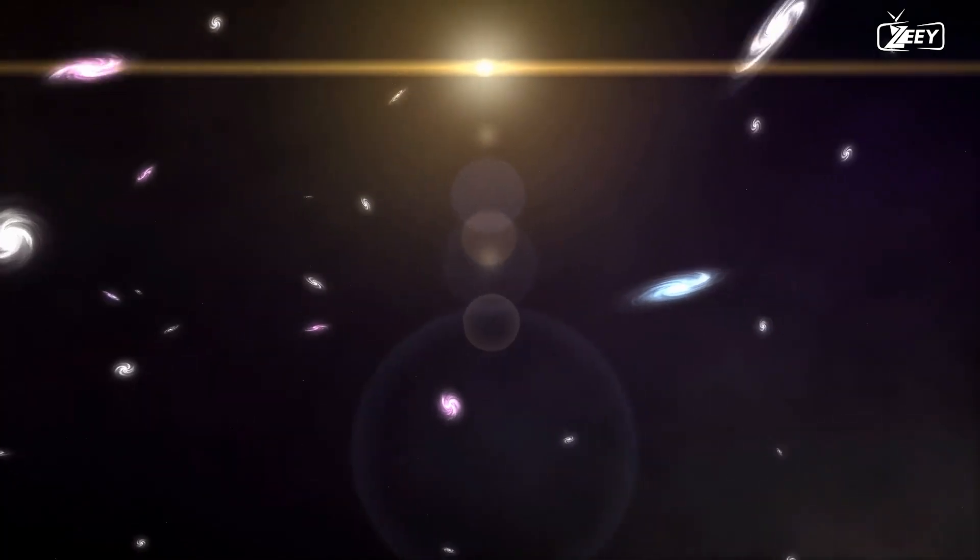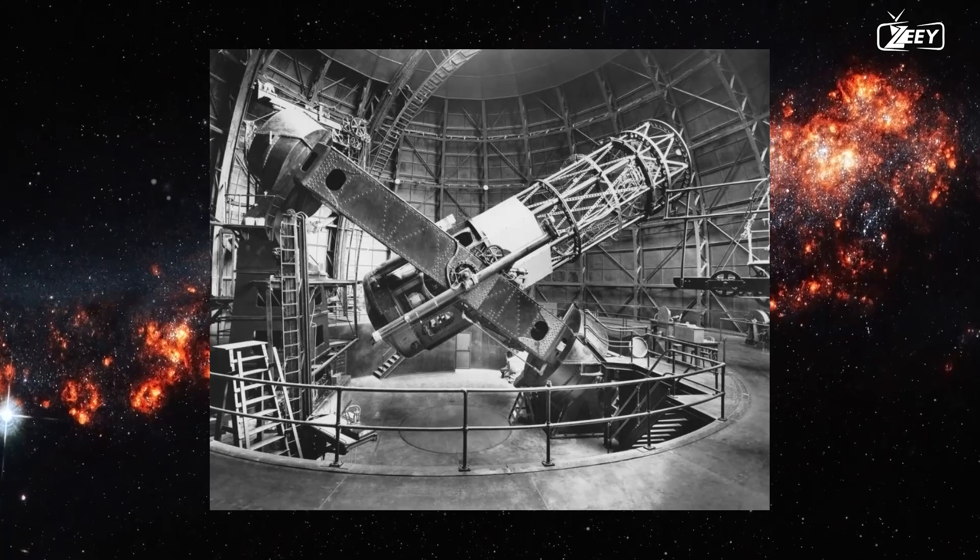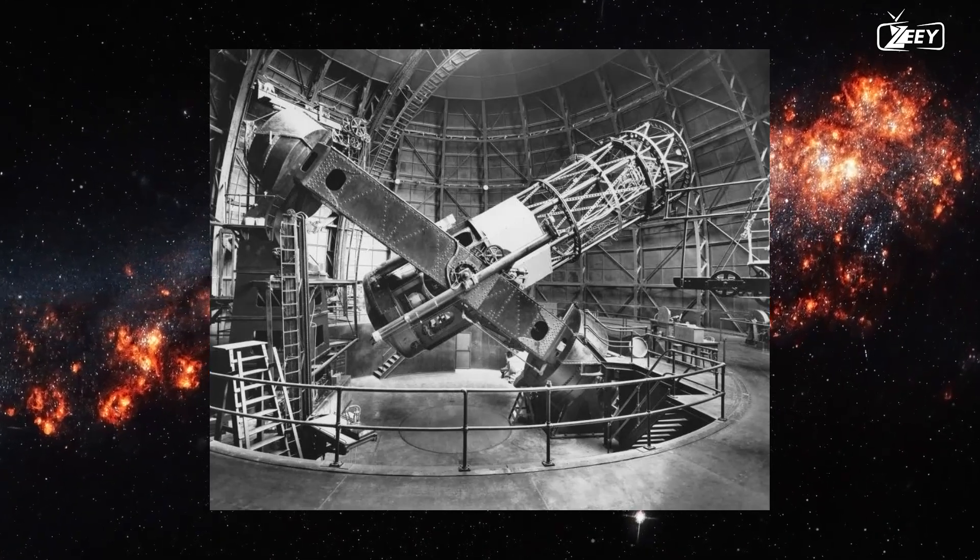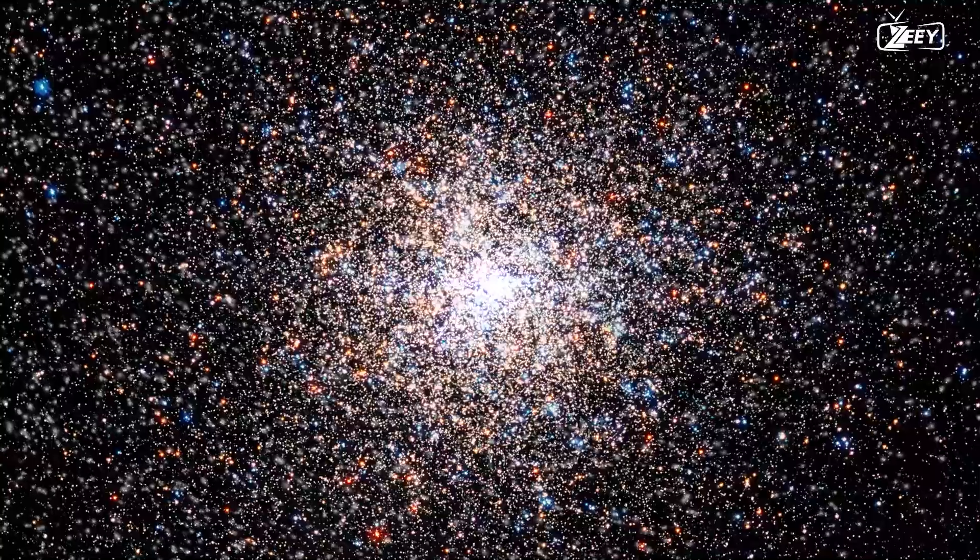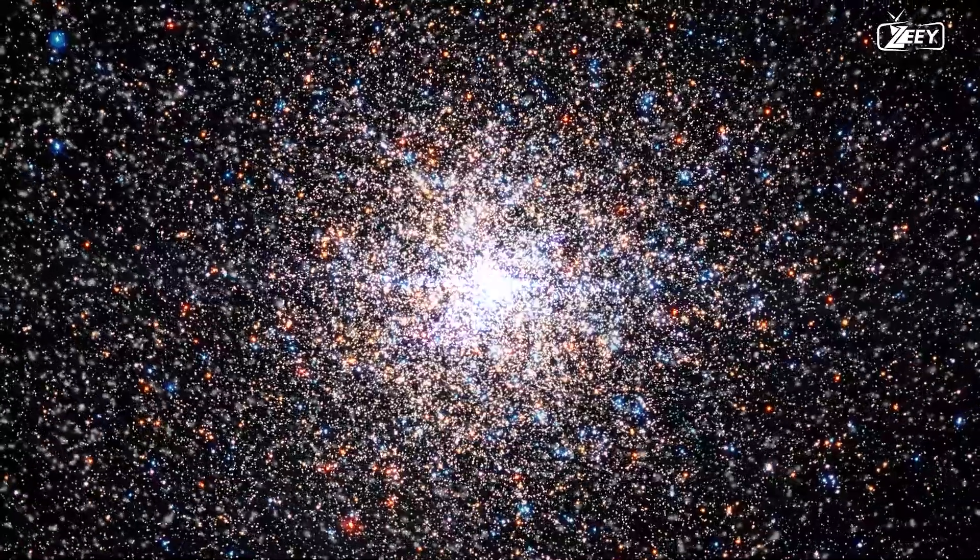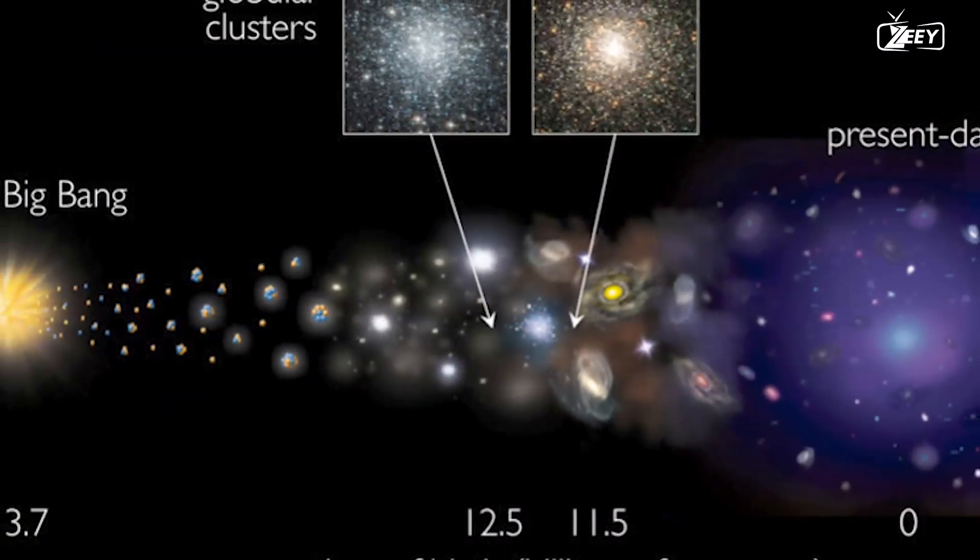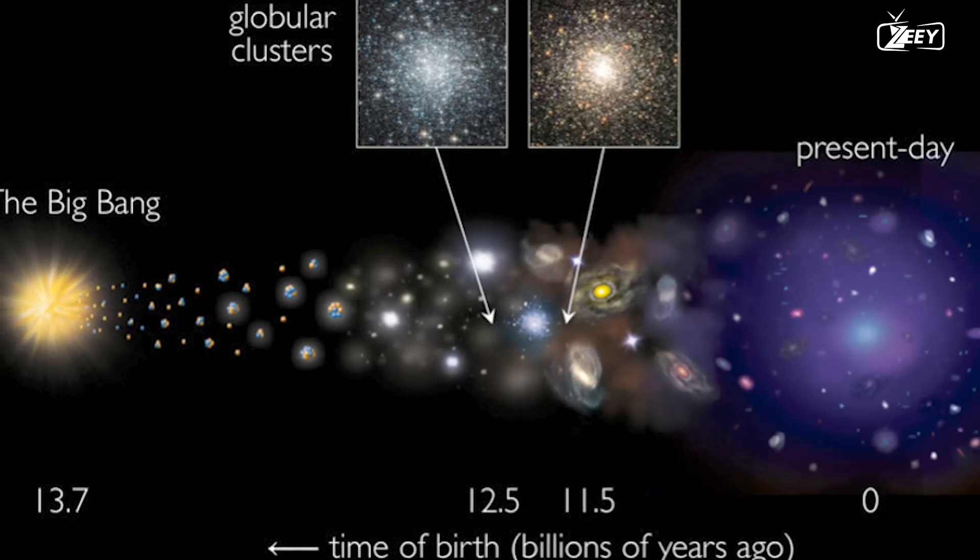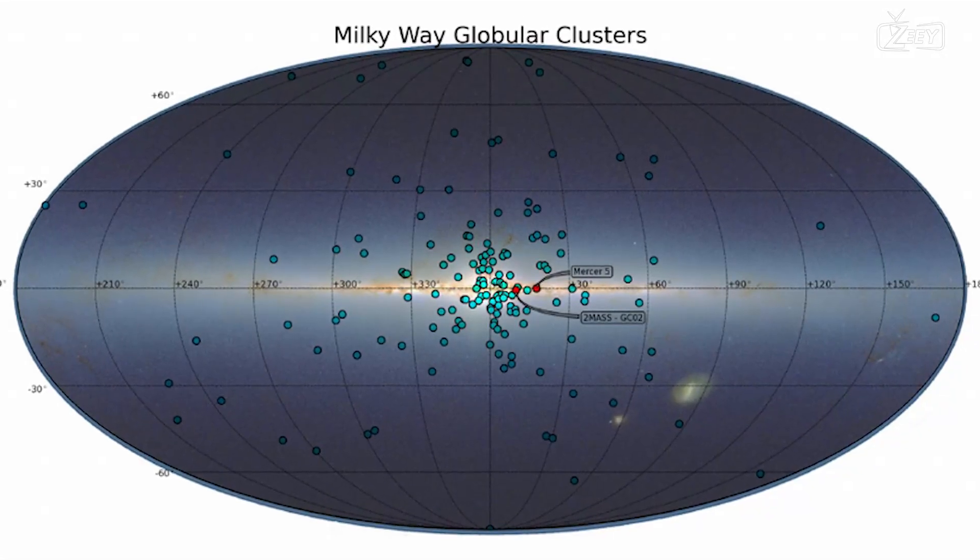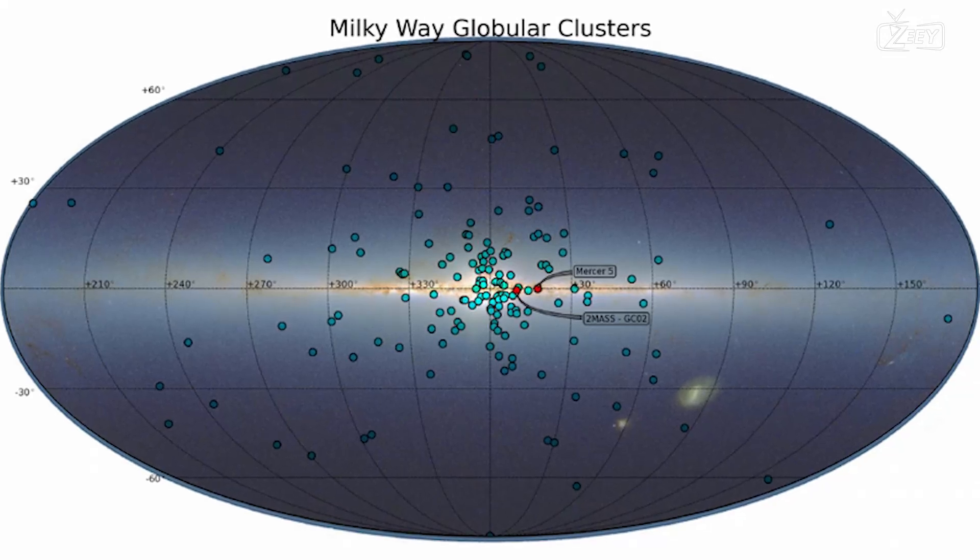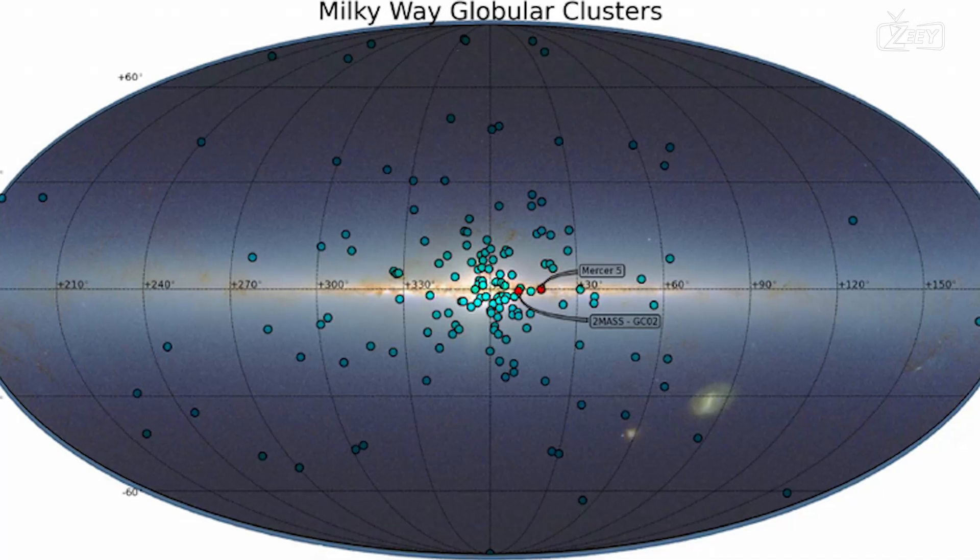Shapley focused his research on globular clusters using the most sophisticated instrument of his era, the 60-inch telescope at Mount Wilson Observatory. These are clusters of hundreds of thousands or even millions of stars that are gravitationally bound to form a spherical shape. They are found either above or below the galaxy's plane. Globular clusters are among the earliest objects in the universe, with many dating back over 10 billion years. Shapley discovered that these globular clusters were arrayed in a spherical pattern around the galactic core, particularly in the constellation Sagittarius. This was a significant observation.